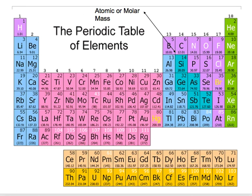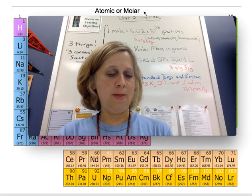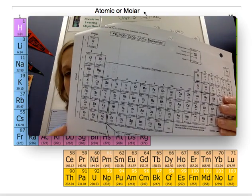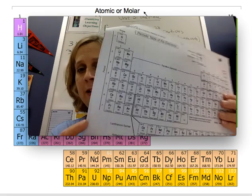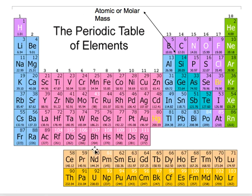On the periodic table — which you have in your workbook on the inside cover — there's a value called the atomic mass. This is the SOL periodic table, so get it out and put it in front of you. The atomic mass is the mass of a mole of atoms for that particular element in grams. So a mole of carbon is going to weigh 12 grams, and a mole of nitrogen is going to weigh 14 grams.